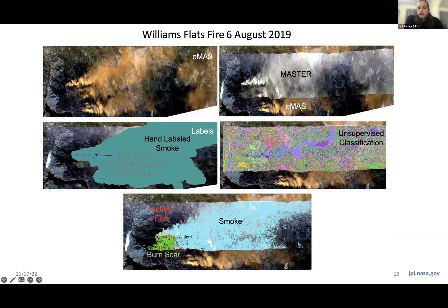We generate an intermediate clustering product, then applied a hybrid approach for fire — best agreement followed by manual tuning — and manual identification for smoke. This manual identification only needs to happen for a small number of scenes, perhaps three to five. That cluster assignment can then be applied to any other images without repeating the process per image. We were also able to identify burn scar cleanly across all images where we had this fusion of instruments.